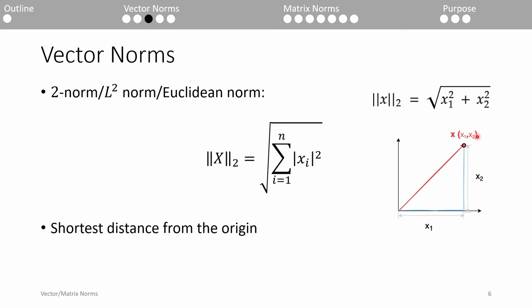If we substitute p equals 2 into the equation from slide 4, we get the 2-norm, or the Euclidean norm. This is the norm you're probably the most familiar with. It's just the straight-line distance from the origin to the point specified by the vector. To compute it, we sum the square of each individual element.